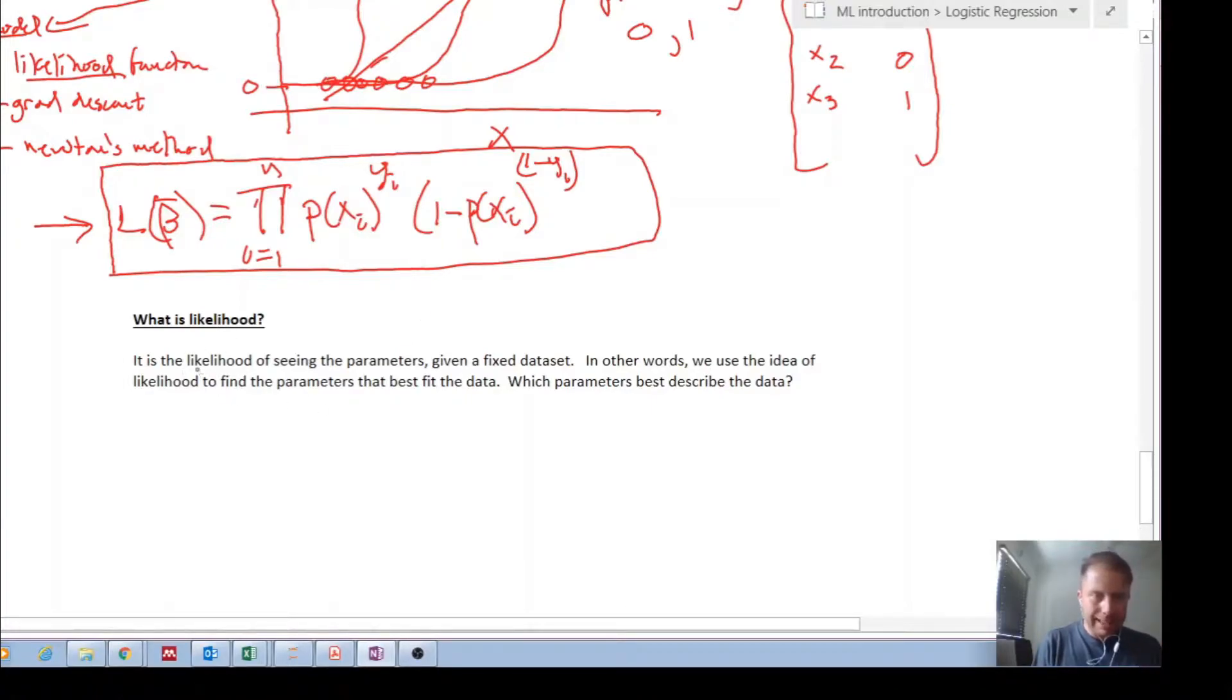I think we are used to maybe probability. But let's see here. Likelihood is the likelihood of seeing the parameters given a fixed data set. So what do we mean by this? So oftentimes, now you've got some kind of Gaussian distribution. And remember, your Gaussian distribution, your probability distribution is given by some parameters. And they are say mu and a variance or a standard deviation.